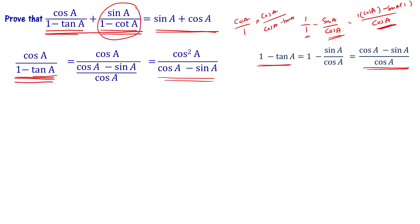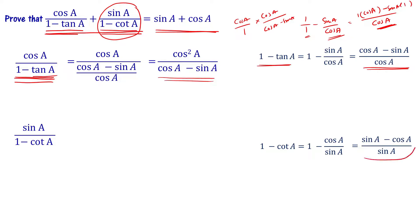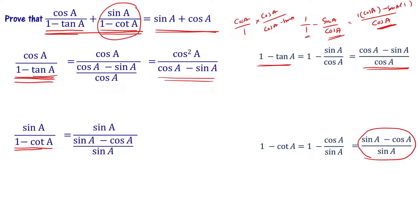Next, let us look at the second term: sin A divided by 1 minus cot A. Since cot A equals cos A over sin A, we have 1 minus cot A equals 1 minus cos A over sin A, which equals sin A minus cos A over sin A. So the second term becomes sin A divided by (sin A minus cos A)/sin A, which gives sin squared A divided by sin A minus cos A.